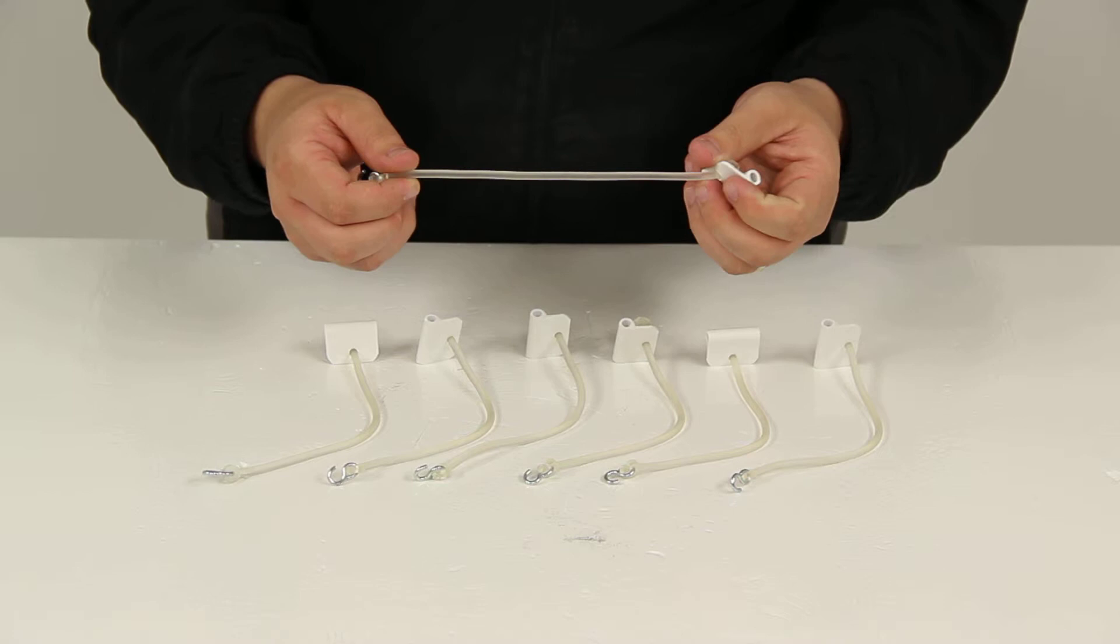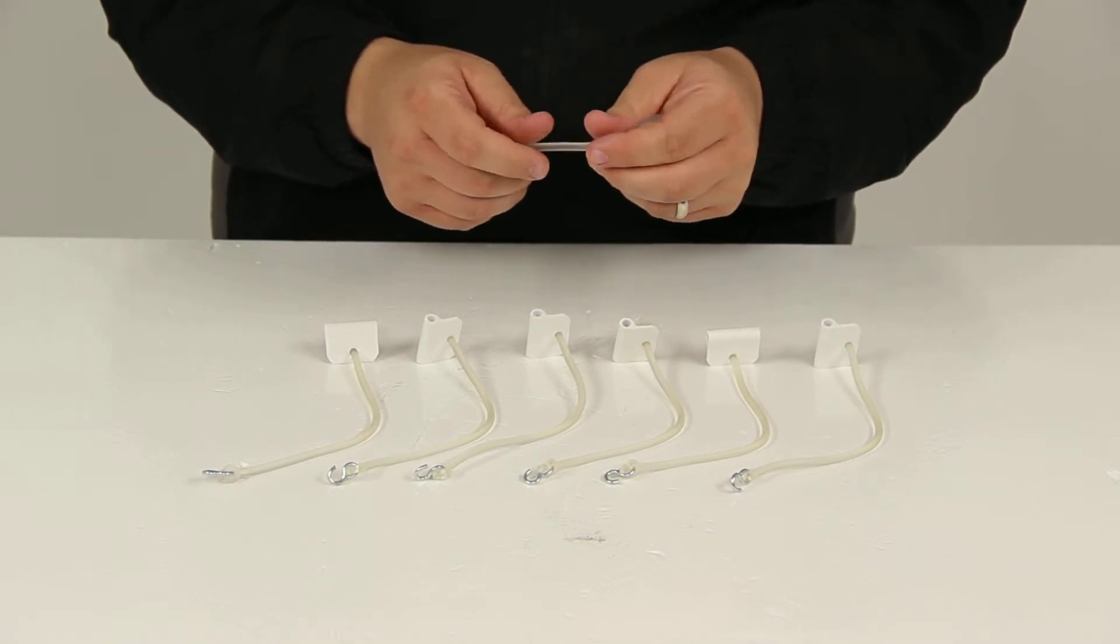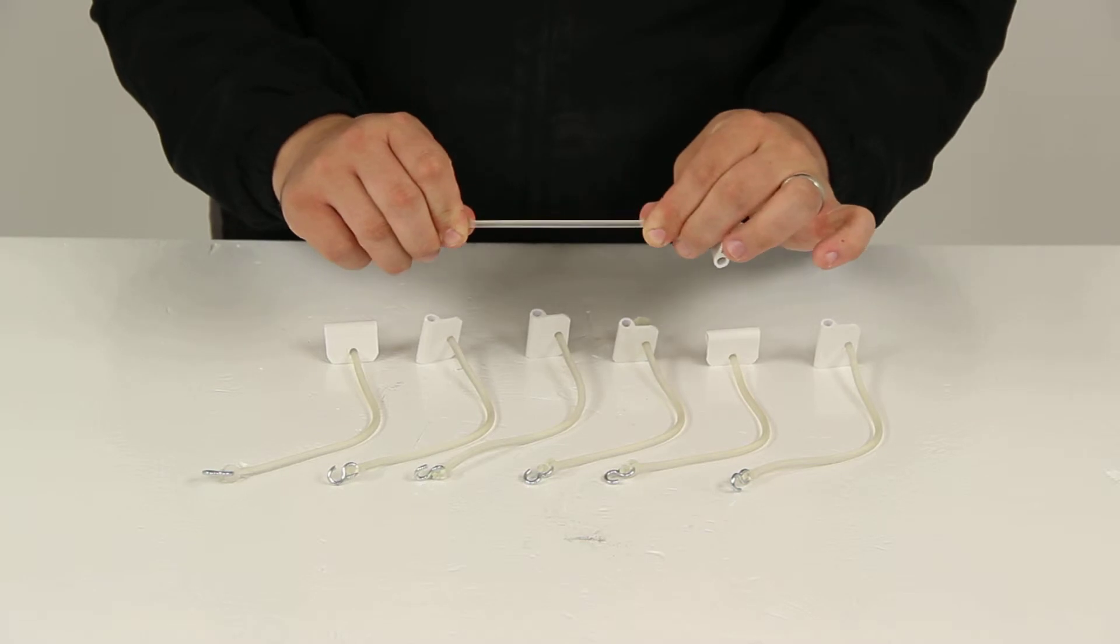And then you have the 8 inch long plastic lanyards that are going to allow the lights to hang below your awning. Those do have a little bit of flex in them as well.